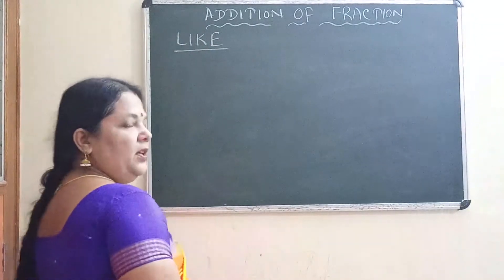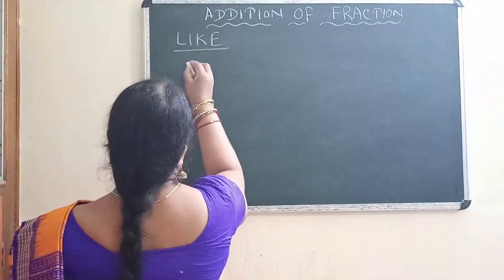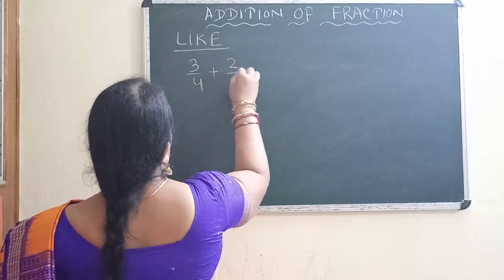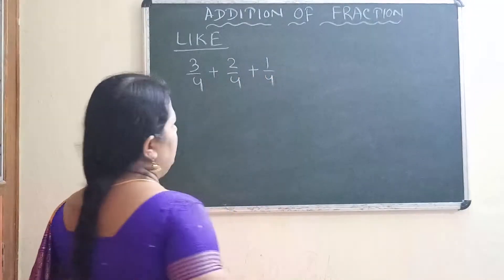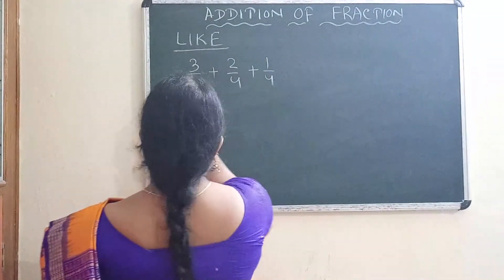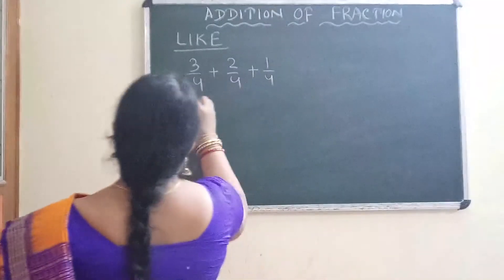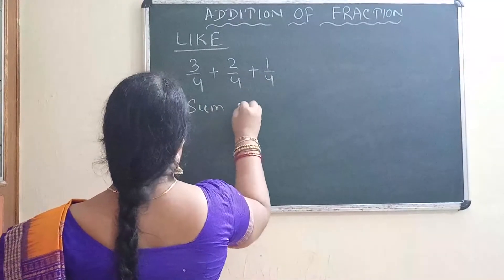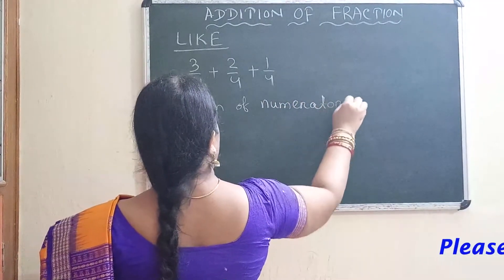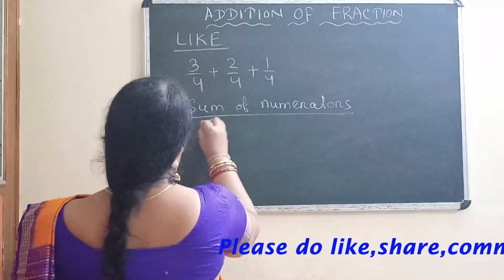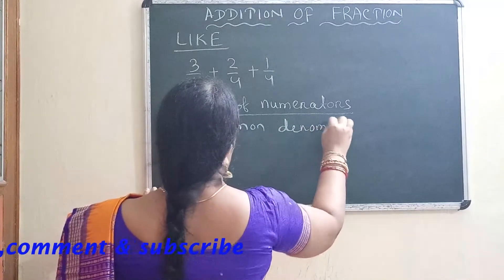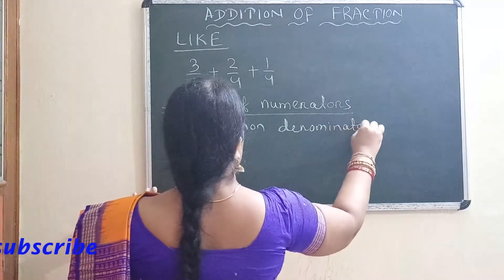Like fractions are where the denominators are the same — we have already discussed this in the previous class. So one example: 3 by 4, 2 by 4, and 1 by 4. Here the denominators are all the same, that is 4.